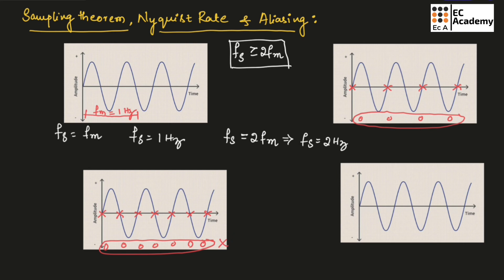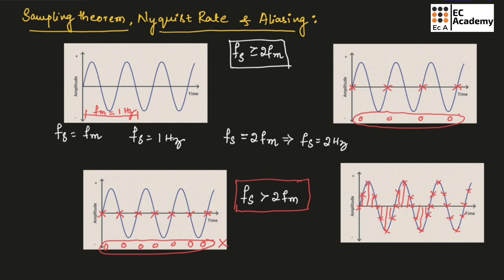That is why we always need to keep the sampling frequency Fs greater than 2Fm. If we keep Fs greater than 2Fm, we will obtain samples at various points including some intermediate values as well. From these sampling values, we can easily reconstruct the analog signal. So from these samples we can easily reconstruct the original analog signal, which is why sampling is very important.